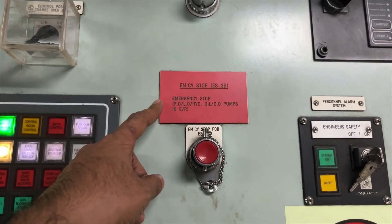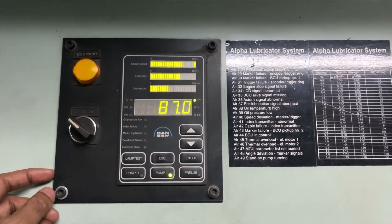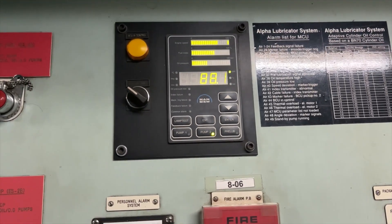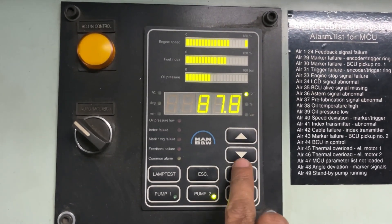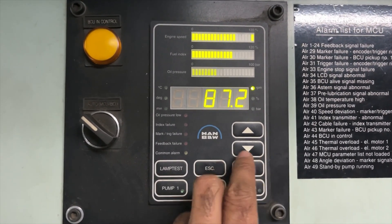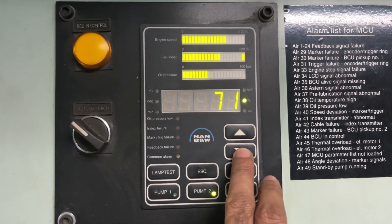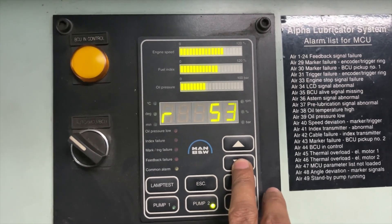Number one and number two this is the alpha lubricator and this is the alarm, this is for alpha lubricator. This is the one which is showing the RPM, you can press this button to show the percentage fuel rack indicator and this is the pressure temperature.